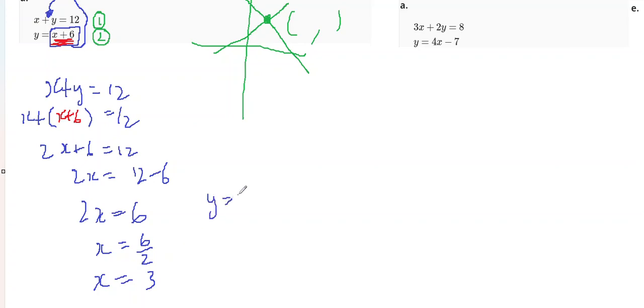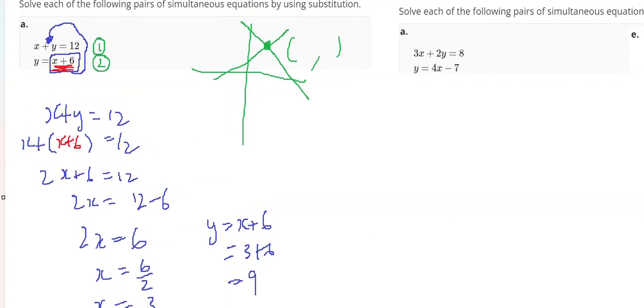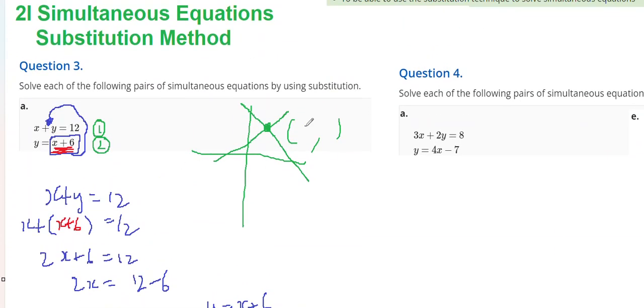Since y equals x plus 6, y must equal 3 plus 6. y must equal 9. Therefore, the solution to the simultaneous equations is 3 and 9.